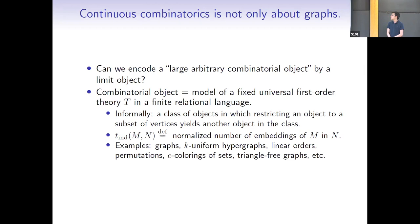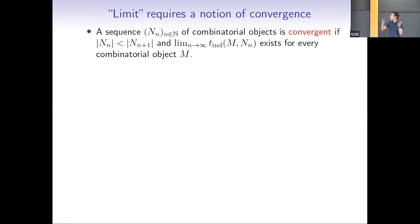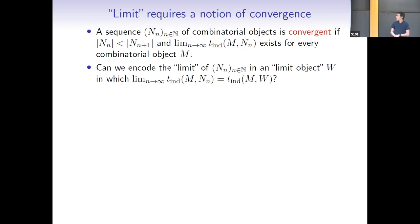We need to say what it means to have a convergent sequence. Given this fixed universal theory, a sequence of objects is convergent if the sizes go to infinity, and for every fixed combinatorial object m, the density of m in the sequence gives a convergent sequence of numbers. There is no assumption of uniformity of convergence — each m just gives me a convergent sequence of numbers. The question is: can we encode this convergent sequence by a limit object?